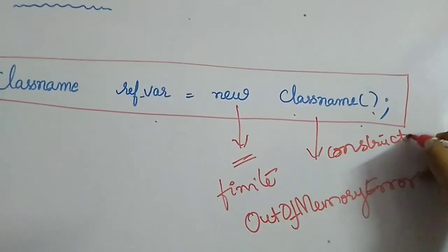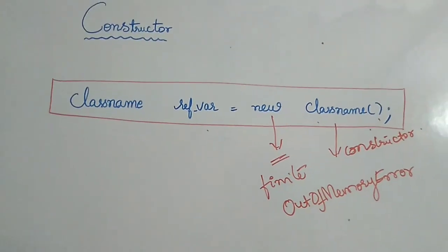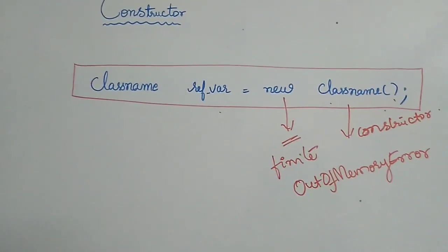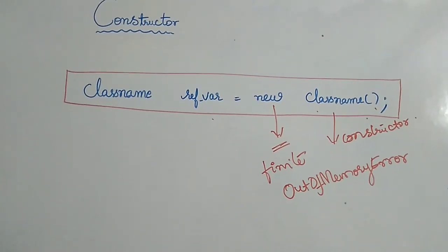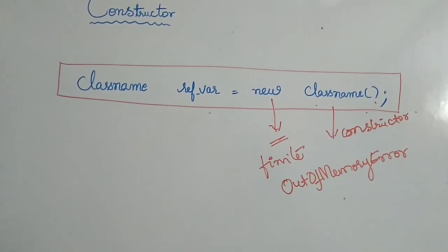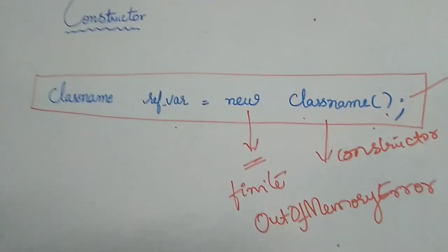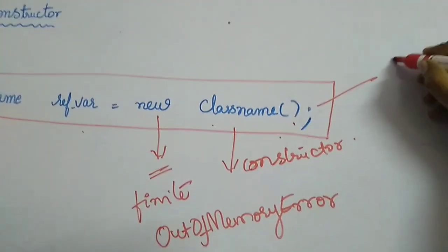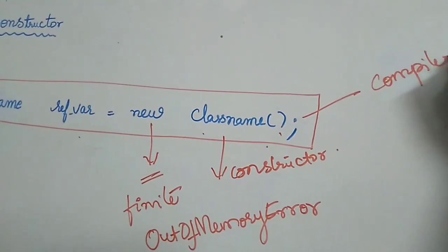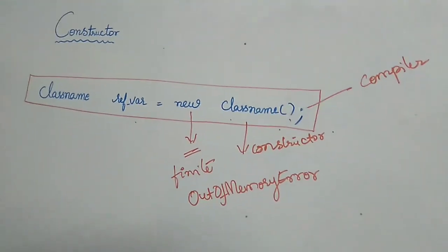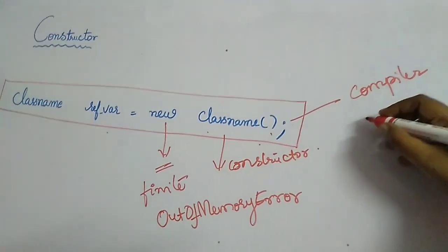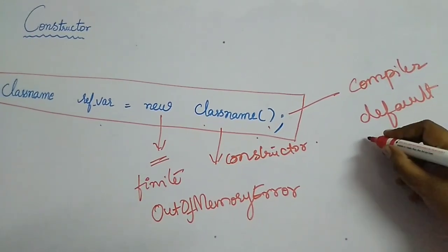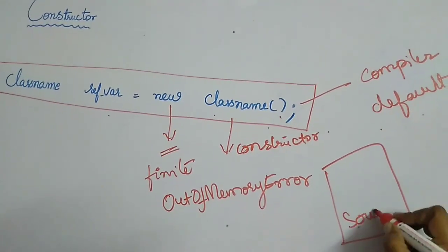Is it mandatory to write the constructor? If you refer to the previous class, I gave the general form of the class without a constructor. So it is not compulsory to write the constructor in your class. If you are not writing the constructor, what will happen is the compiler during compilation time will add the default constructor to your code.